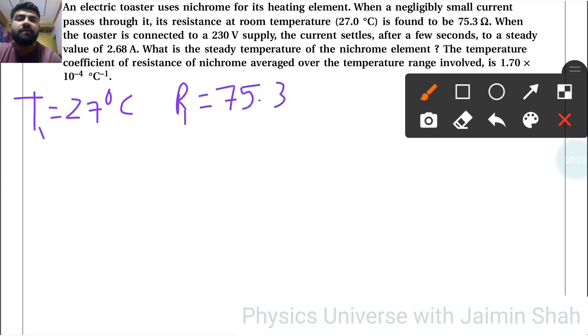So T1 equals 27°C, R1 equals 75.3Ω. When the toaster is connected to a 230V supply, the current settles after a few seconds to a steady value of 2.68A. What is the steady temperature?